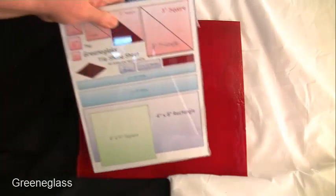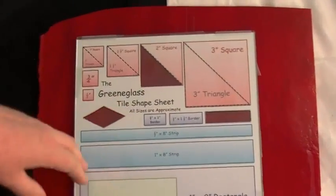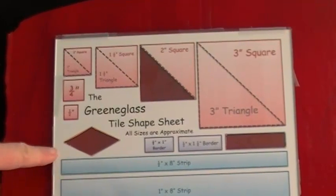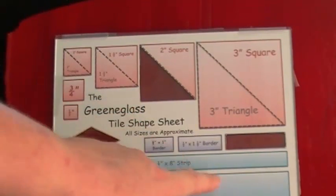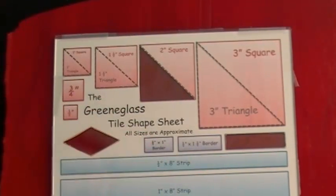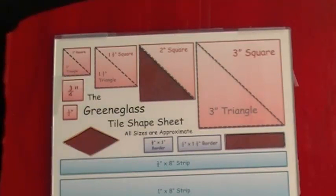Now here is our tile shape sheet, and you can see our diamond, our two inch triangle, and our largest border piece to give you an idea of what you are looking at.